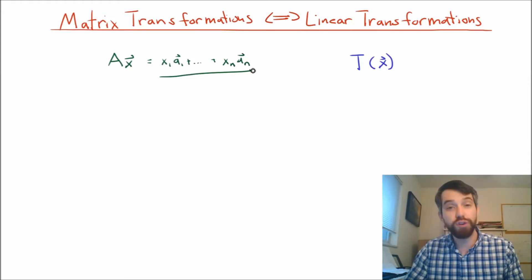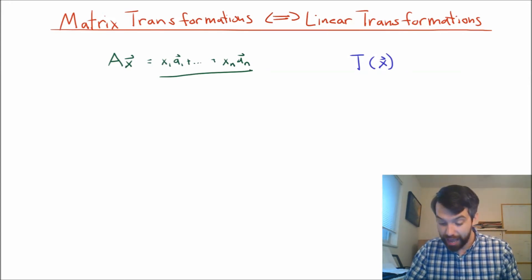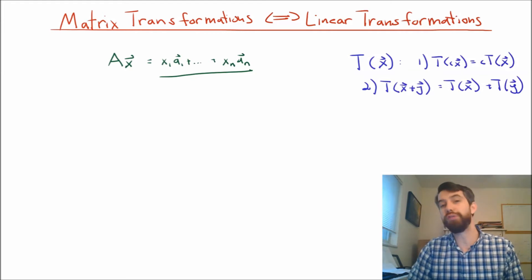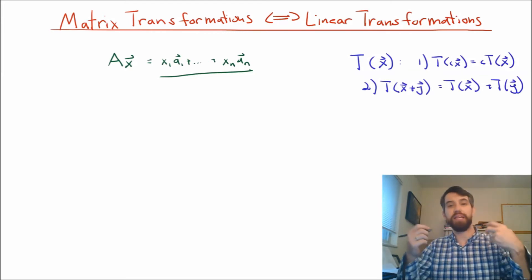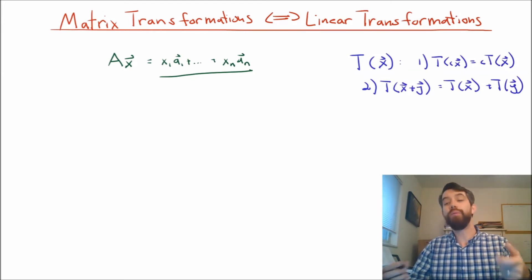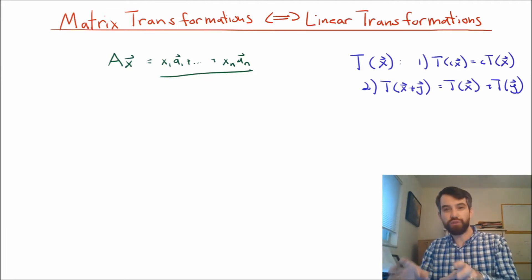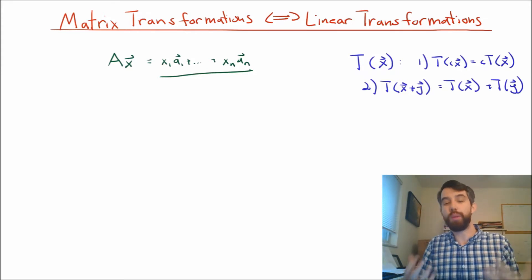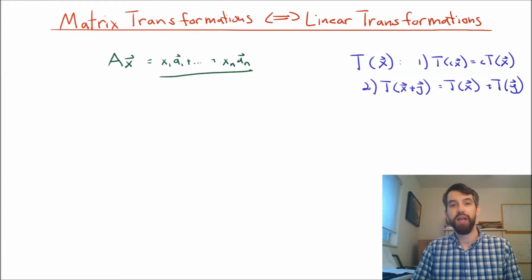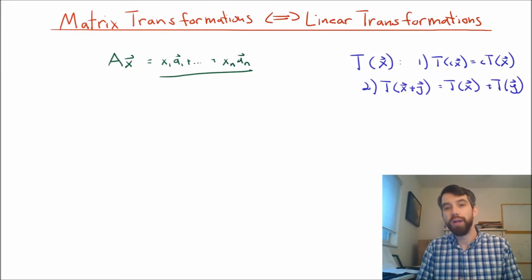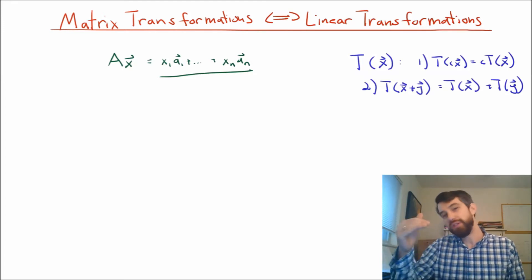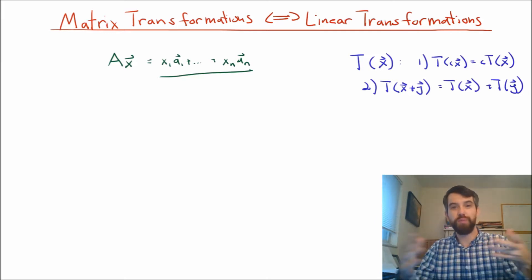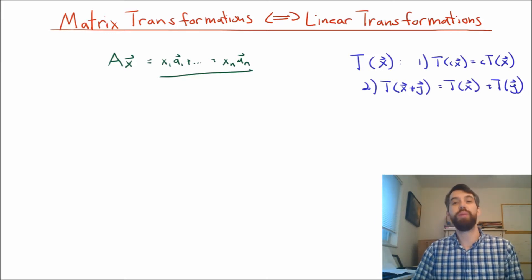Now let's investigate linear transformations. Linear transformations had to obey two different properties. One is that they played nicely with scalar multiplication, and one was that they played nicely with vector addition. And indeed, we really liked linear transformations because they respected the two major operations that we can do on vectors. We can either multiply a vector by a scalar, or we can add two vectors.